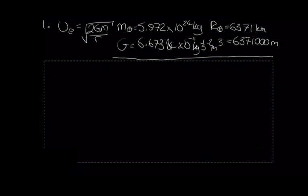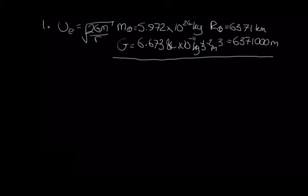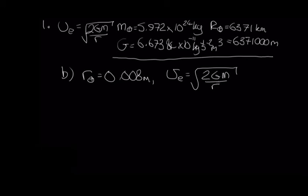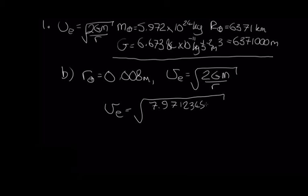For part B, we want to work out the escape velocity if we shrink the Earth down to just 8 millimeters across. In this case, the new radius for the Earth is 0.008 meters, but G and M are still the same. We can still use v_esc = √(2GM/r). The top line 2GM is the same as before: 7.9712345×10¹⁴, because G and M haven't changed.